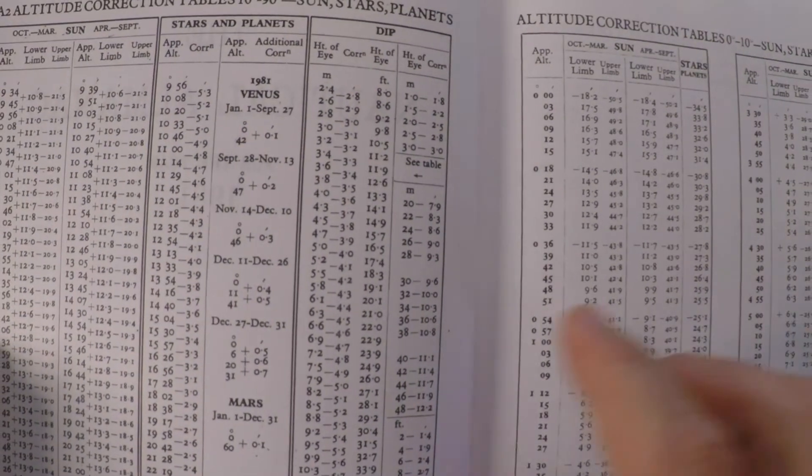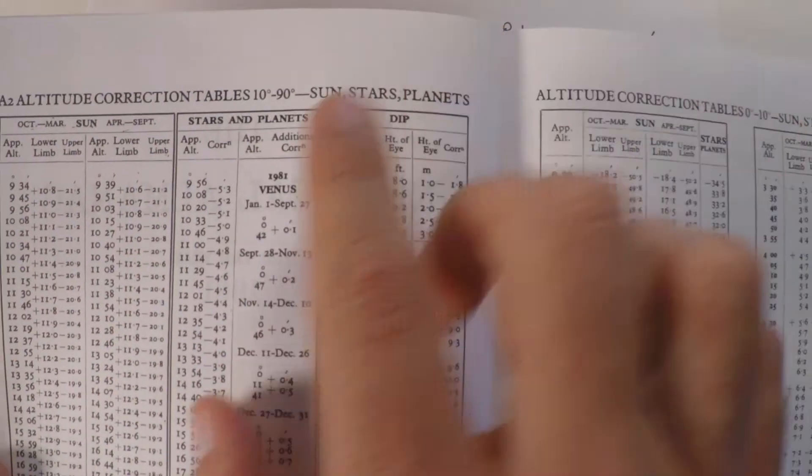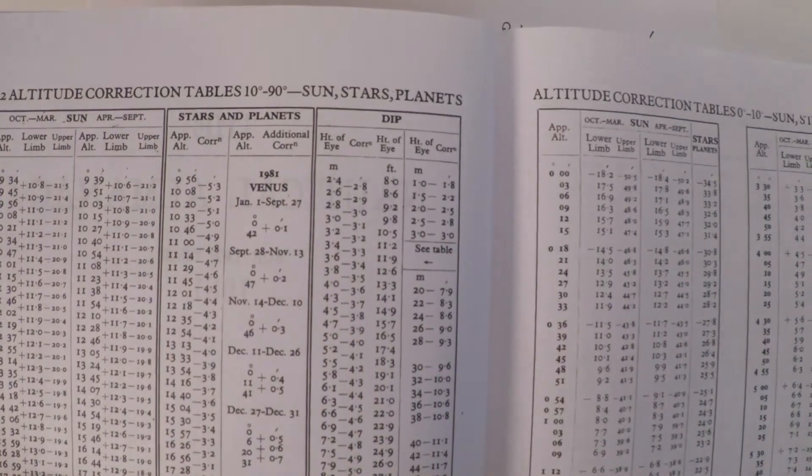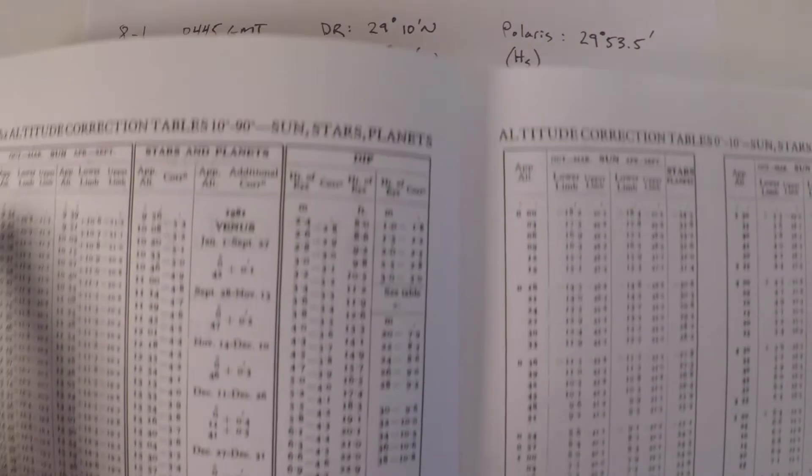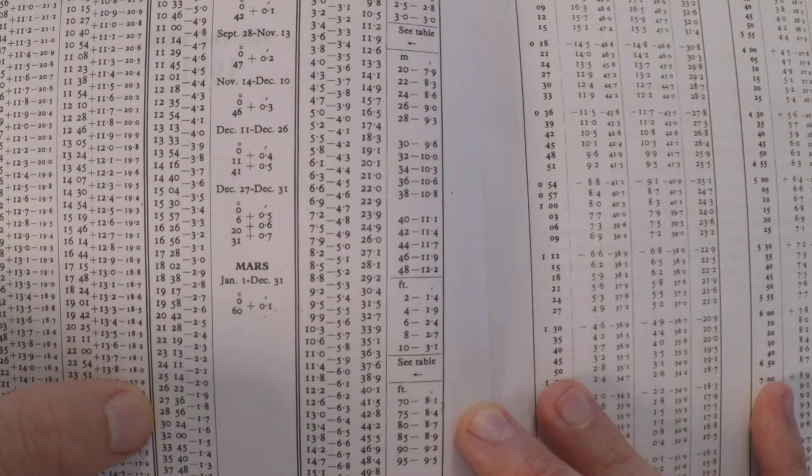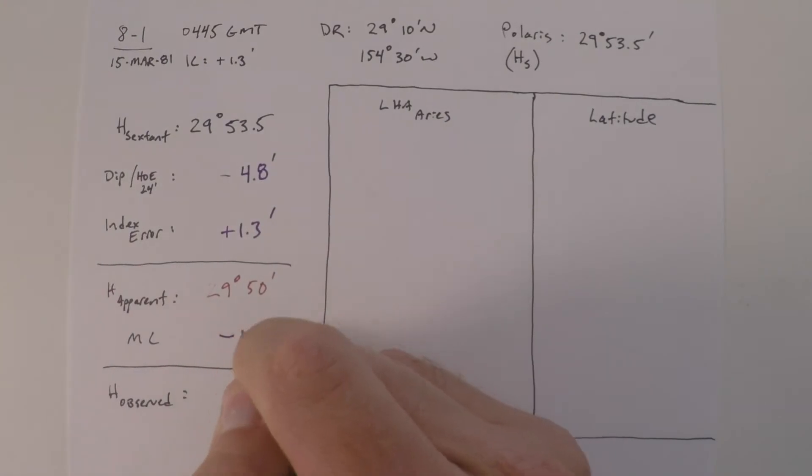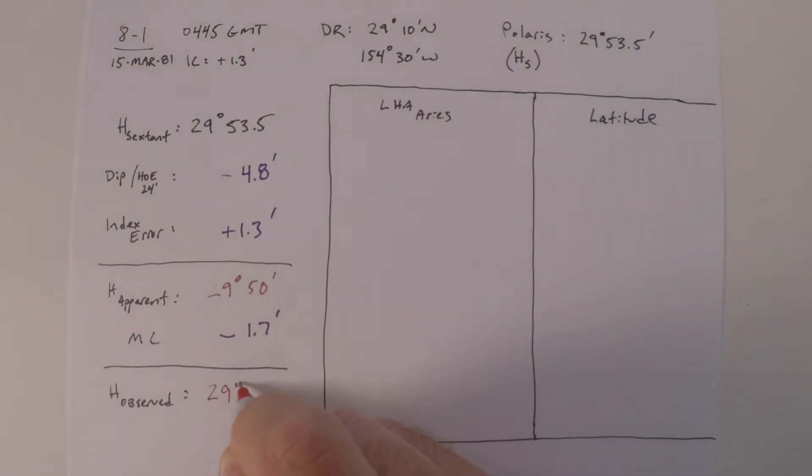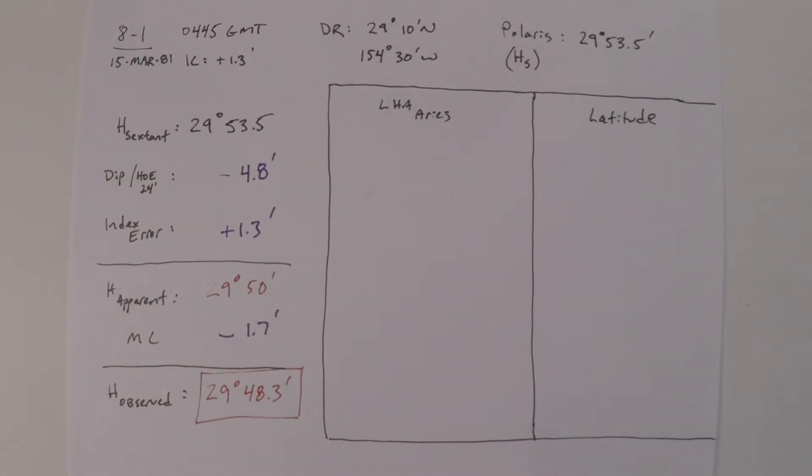The last preliminary step is again to use the nautical almanac and apply the main correction. Previously we've used the sun corrections, but here we're going to need to use the star and planets correction since we're using the star Polaris. Given an apparent altitude of 29 degrees and 50 minutes, if we come down the main correction table to the closest value, it looks like our correction will be negative 1.7 minutes. Doing that math, we get a total height observed or HO of 29 degrees and 48.3 minutes. We're going to use that value to go into the Polaris tables next.